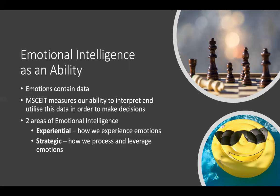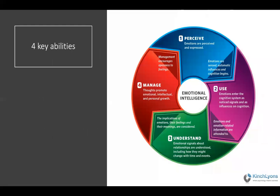The experiential area is how we actually take in and experience emotions — taking in that information. Then with that information, how do we process it and leverage those emotions when making decisions? Looking at the MSCEIT model, we identify four key abilities. Firstly, emotions contain data and information about us, about other people, and the world around us — so can we accurately perceive those?